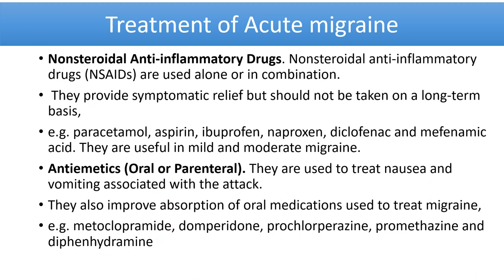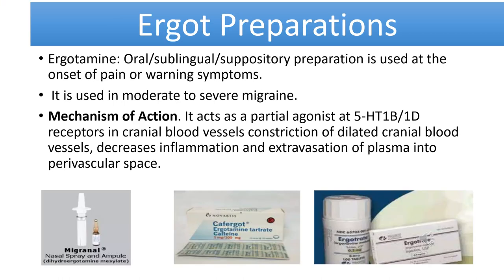Ergotamine preparations can be used orally, sublingually, or as a suppository at the onset of pain or warning symptoms. The mechanism of action is partial agonism at 5-HT1B and 1D receptors in cranial blood vessels, causing constriction of dilated cranial blood vessels, decreased inflammation, and reduced extravasation of plasma into the perivascular space.